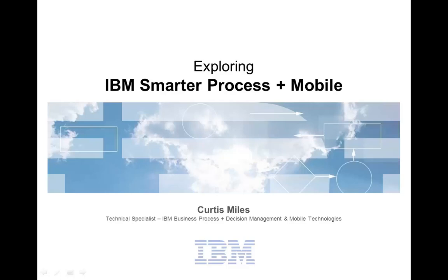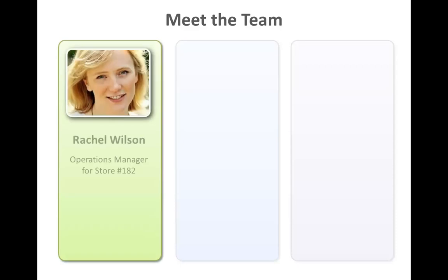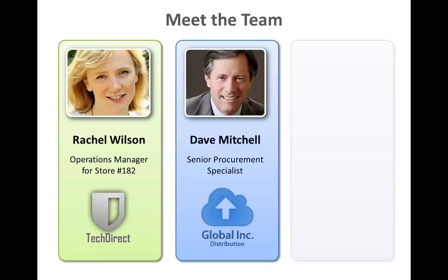Hi, my name is Curtis Miles and I want to take you through a quick demonstration of using IBM's Smarter Process Portfolio in combination with mobile technologies to unlock business potential. I want to take you through an example that has three players. Number one is Rachel Wilson, who works for a consumer electronics retailer called TechDirect and she's the store manager. We also have Dave Mitchell who works for Global Inc. and is responsible for procurement — all procurement that TechDirect does is done through Global Inc., and he's a procurement specialist.